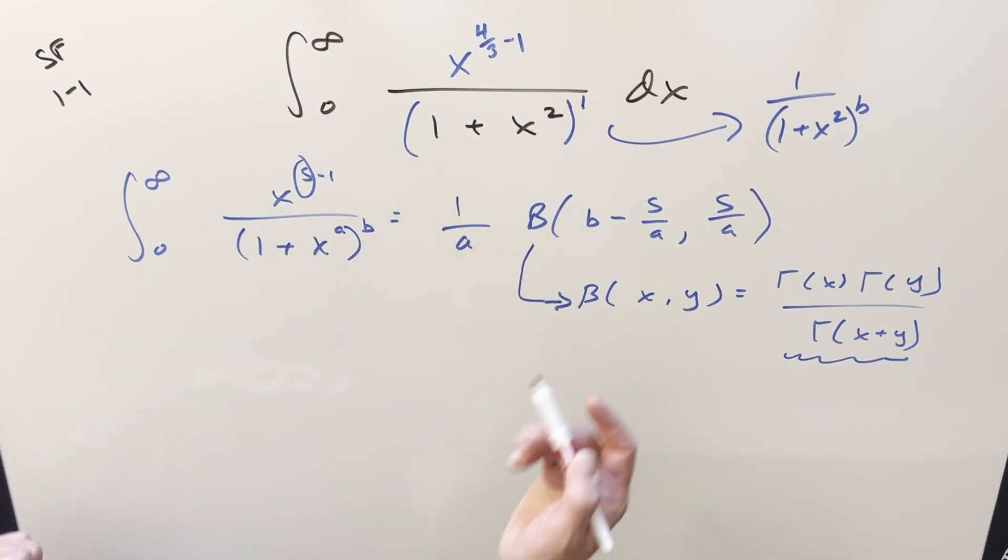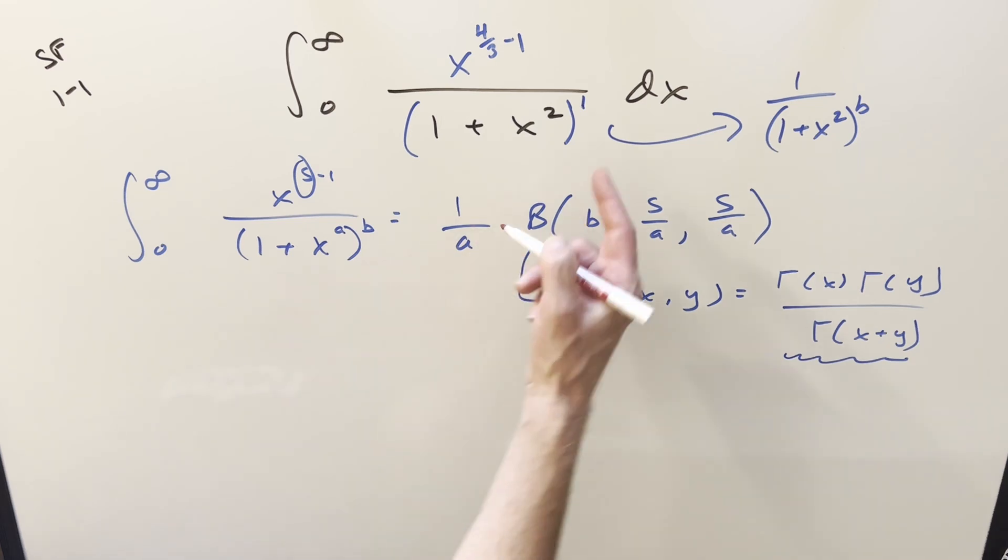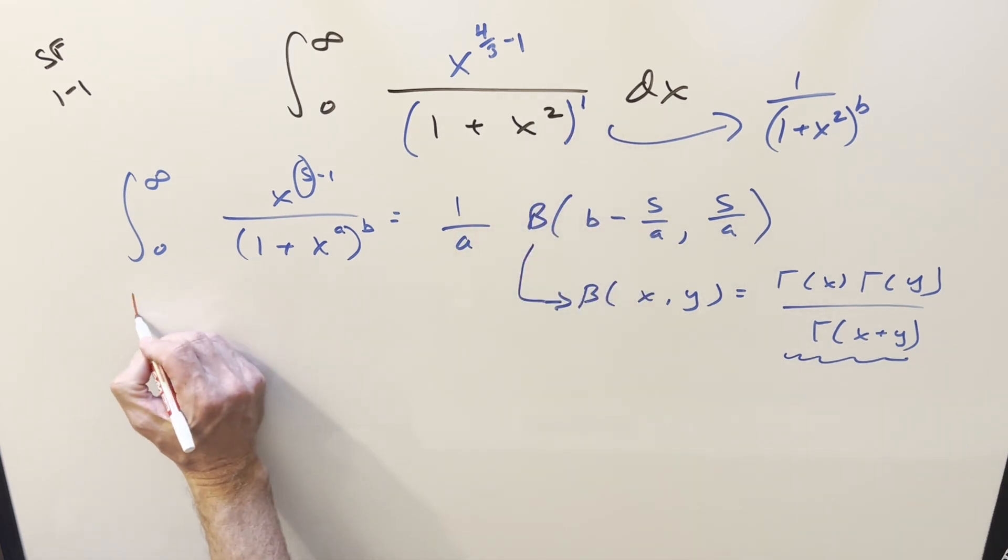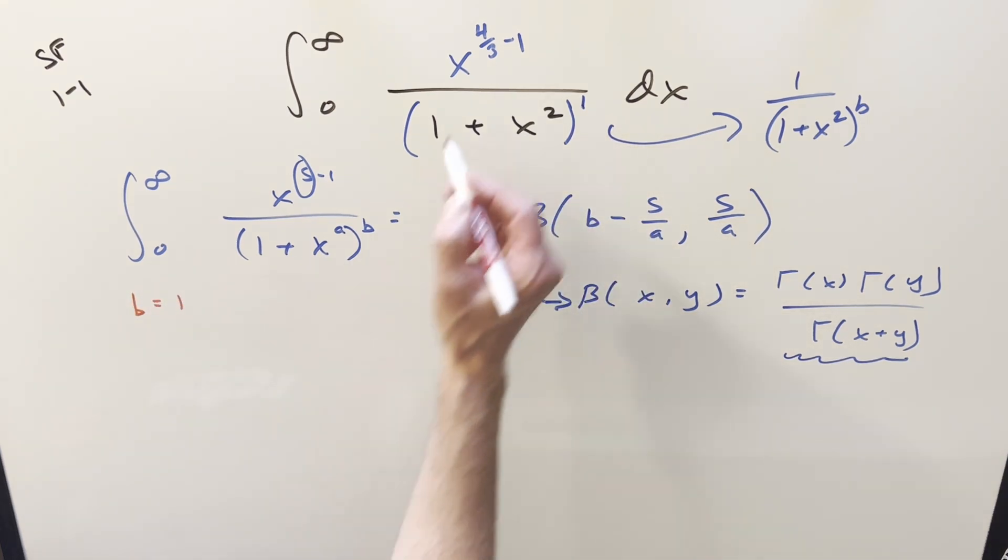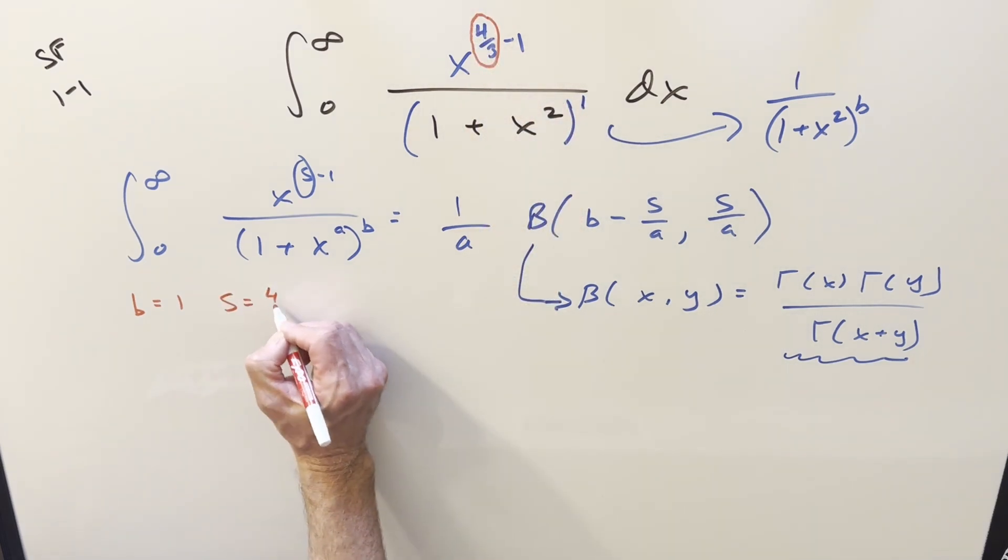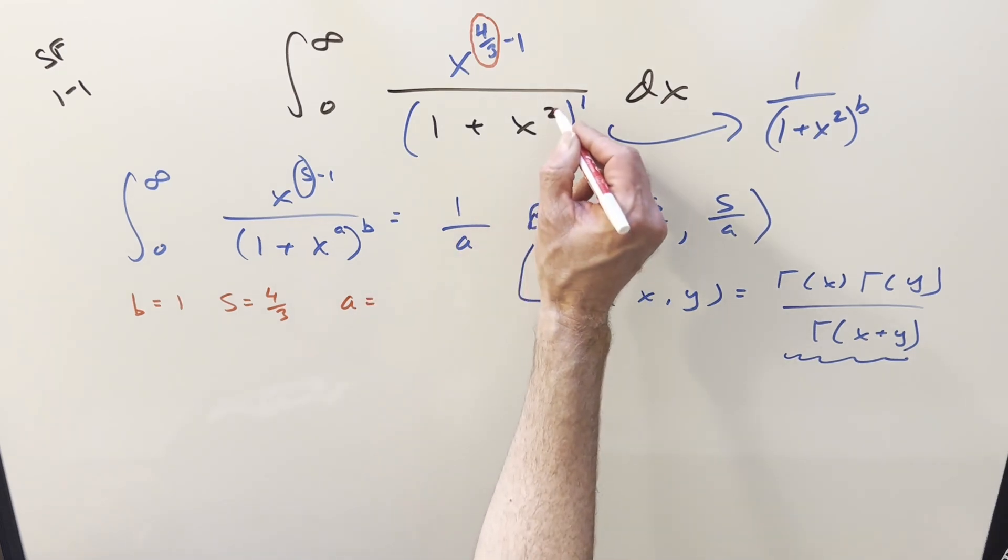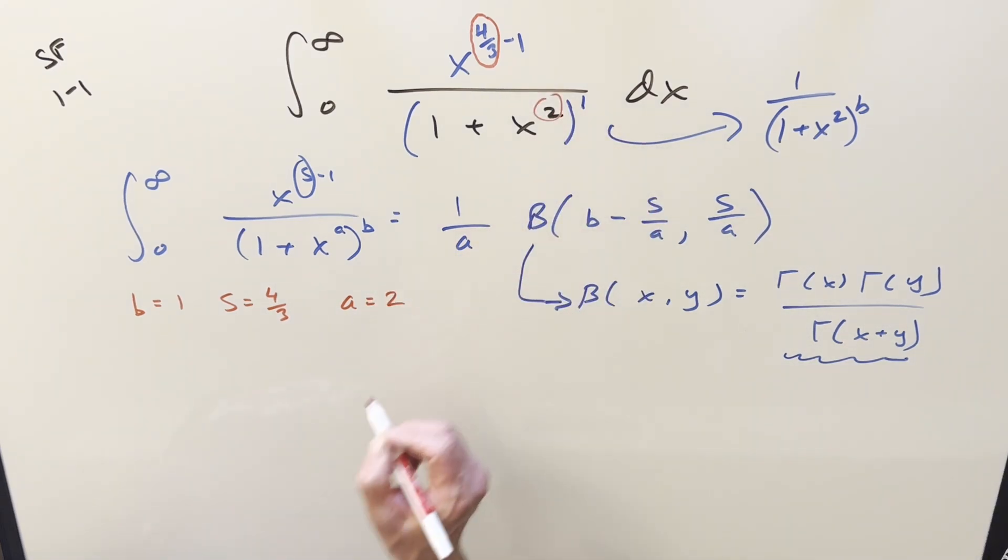What we can do is go ahead and just use our formula. We just need to identify the s, the a, and the b. In this we already said we just created that b, so our b value in this is going to be one. Our s value the way we have this set up, s is going to be just four thirds. And then the a value, that's just going to be the exponent on the x, this right here. So our a value is going to be two.